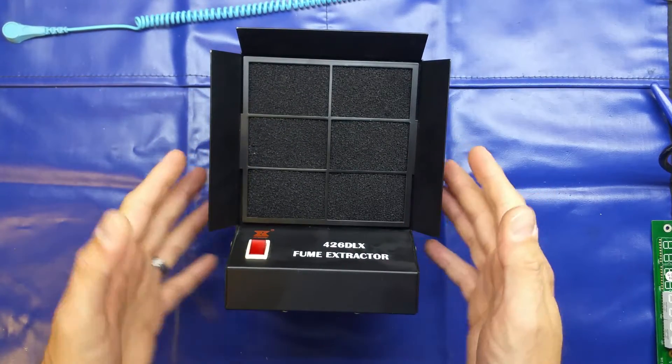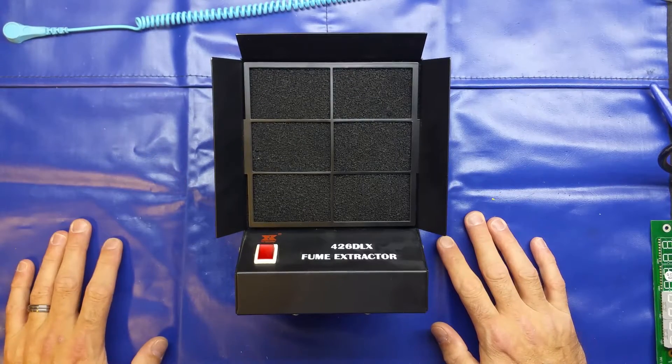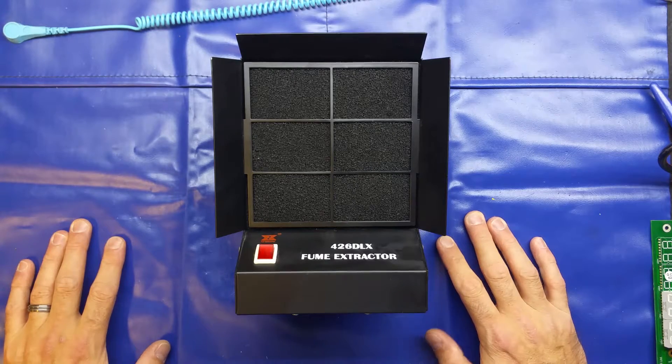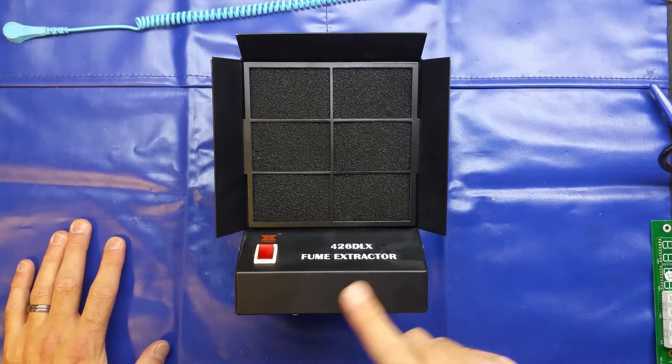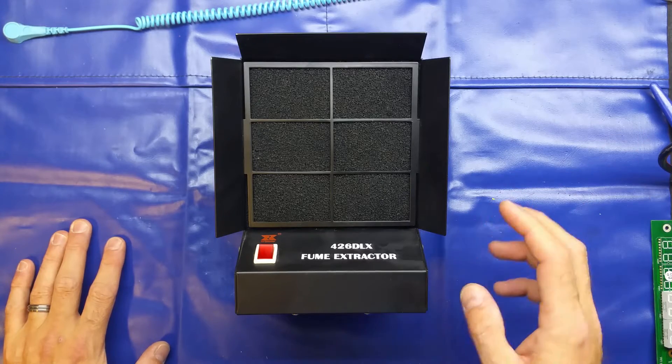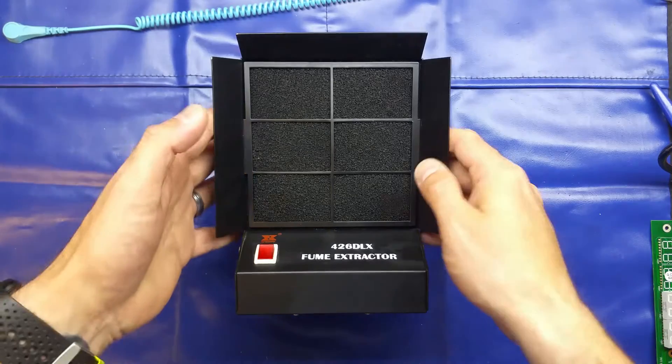It's pretty much essential to have one of these nowadays if you're doing a lot of soldering, especially if you're using lead-based solder to get rid of the nasty fumes. My previous fume extractor, which I think I got from Maplins, failed quite a while ago, so I just thought I'd get another one to replace it. I'll just give you a quick overview.